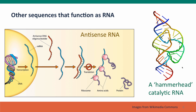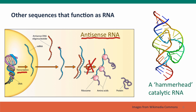Another category of functional RNA that can be changed by mutation are what are called antisense RNAs. You'll encounter one of these in Module 3. These are RNAs whose function is to prevent the expression of genes not by preventing transcription, but by preventing translation. They do that by being complementary to part of the messenger RNA, so the antisense RNA can form base pairs with the messenger RNA and prevent it from being translated.